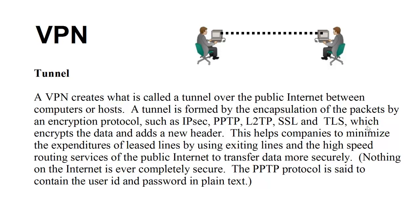This helps companies minimize their expenditures on leased lines by using the existing internet infrastructure and high-speed routing services of the public internet to transfer data more securely. Many companies lease their own lines from telecommunications companies to keep proprietary data secure, but those lines are expensive and sometimes slower than the public internet. By creating a VPN tunnel through a public network, companies often get higher speeds, better performance, and avoid the cost of leased lines.